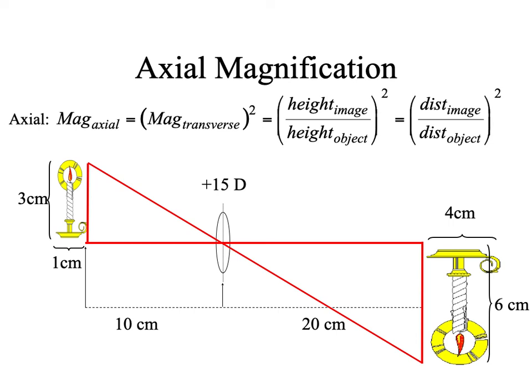Axial magnification is transverse magnification squared. So if an object is twice as high, it is four times as wide because two squared equals four.